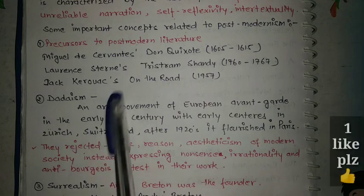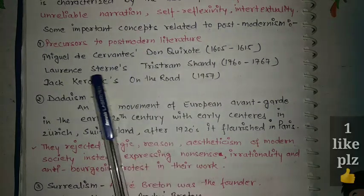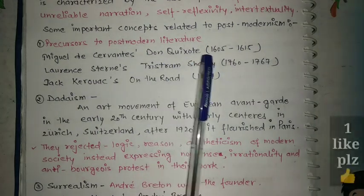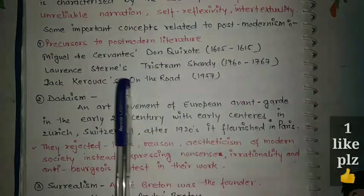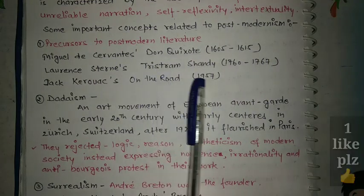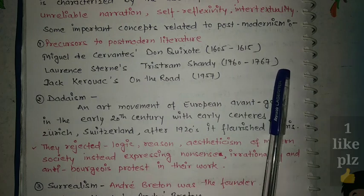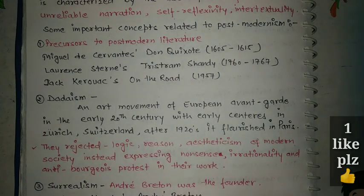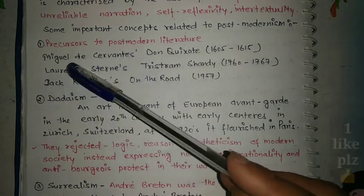Here are some important concepts. The precursors to postmodern literature include Miguel de Cervantes' Don Quixote, published between 1605 and 1615; Laurence Sterne's Tristram Shandy, 1760 to 1767; and Jack Kerouac's On the Road in 1957. These works are called precursors to postmodern literature.